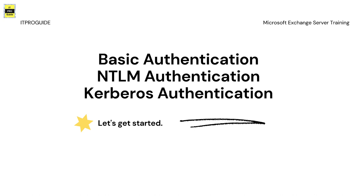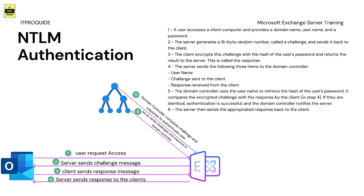Let us see how the NTLM flow works, and that will help us understand why NTLM authentication is not always the best choice and why Kerberos authentication is not always preferred either. In the diagram, we have a client, a server, and a domain controller — that is Outlook, Exchange Server, and Active Directory. When a user provides a domain name, username, and password, the password gets hashed through a hashing algorithm into a text value that cannot be reversed.